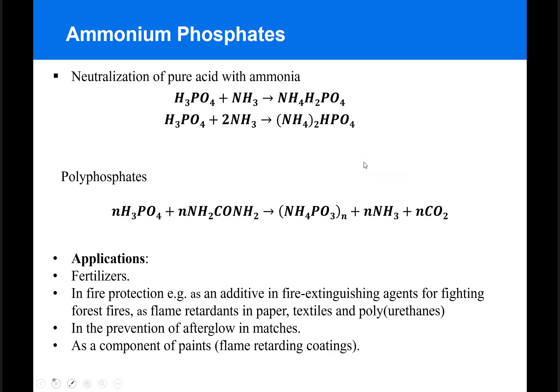Ammonium phosphates can be obtained from the neutralization of pure acid with ammonia, although this only allows the production of the monoammonium phosphate and the diammonium phosphate.